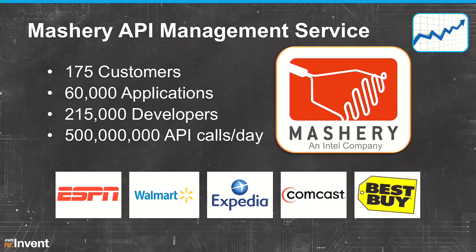Mashery is a company that does API management services for a wide range of enterprise customers — ESPN, Walmart, Expedia, Best Buy, Comcast — all customers of Mashery. They demonstrated the ability to make it very simple for companies to manage their APIs as a product. Today, still a relatively new acquisition, they already have 175 customers, 60,000 applications, 215,000 developers, and about half a billion API calls a day. That's not yet in the API billionaires club like Twitter or Facebook, but it's getting pretty close and the growth is moving fast. When you've got this kind of enterprise-class requirements and customers expect things to scale, how do you get it to scale?